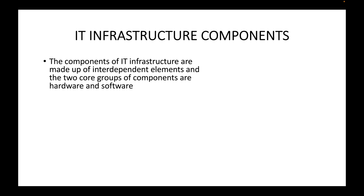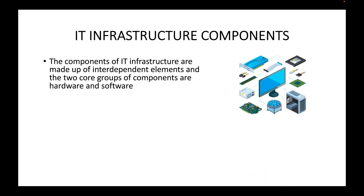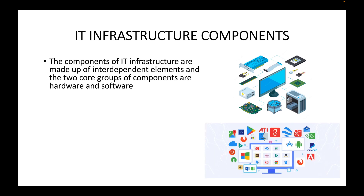Generally when we talk about the components in an IT infrastructure, these are interdependent elements divided into two main categories: hardware and software. Hardware is basically all the physical components used to bring up your system, and software is the applications that we run on top of those hardware components.